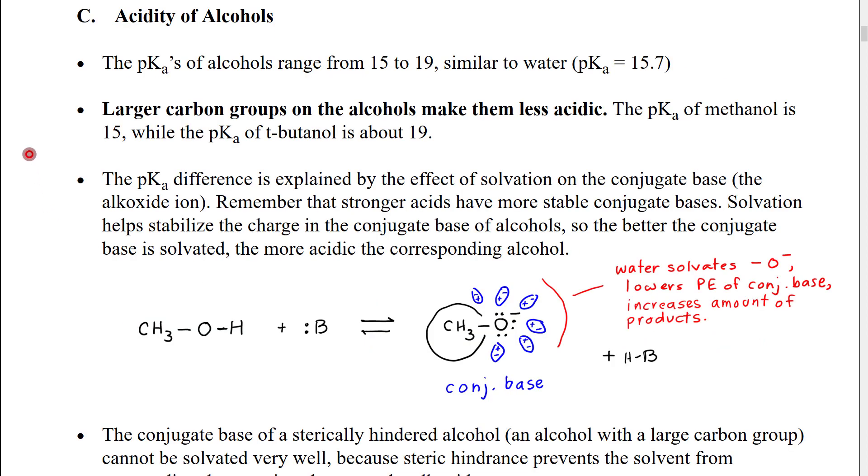I briefly want to review with you in a little bit more detail the acidity of alcohols because alcohols are often used as acids or bases in chemical reactions. What we see when we look at the acidity of alcohols is that the pKa of alcohols comes in a range from 15 on the lowest end to about 19 on the high end.